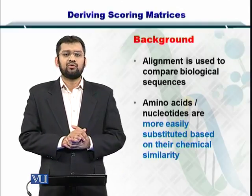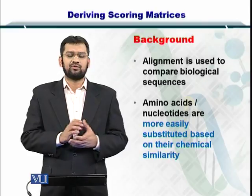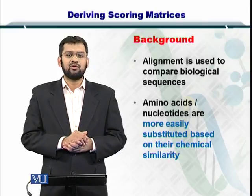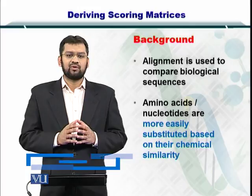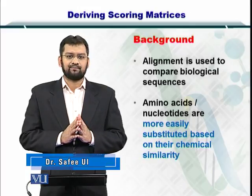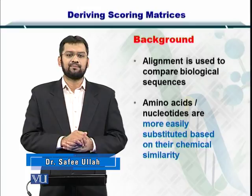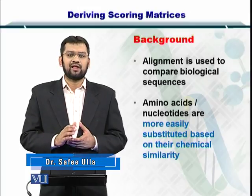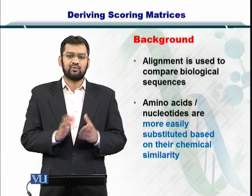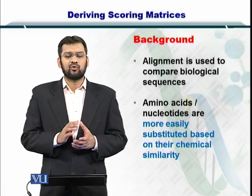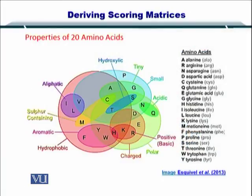So you already know the purpose of scoring matrices and their utilization. But just to give you an overview, we compare biological sequences by aligning them or we call it the pairwise sequence alignment. And during this alignment, we rank the matches between sequences using scoring matrices. So by looking at the chemical properties of these amino acids, we can actually see which amino acid should get a higher score and which amino acid substitution should get a lower score.